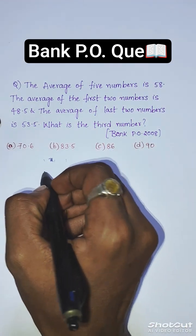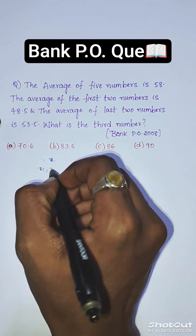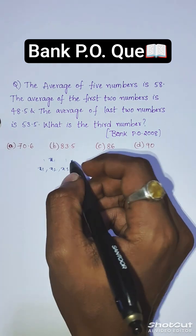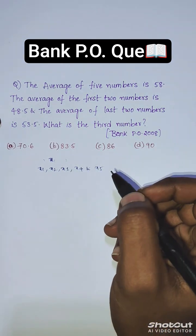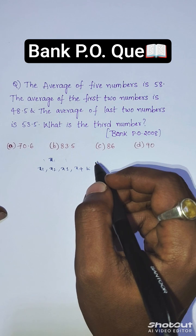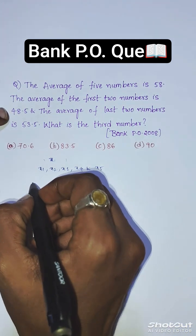Let's assume the five variables are x1, x2, x3, x4, and x5. Here it is mentioned that the average of the first two numbers is 48.5.